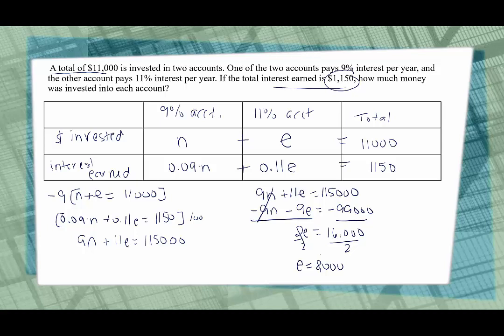How much is invested in the account that pays 9%? Go back to one of the two original equations, so you can either use this one or this one and plug in $8,000 for E. I'm definitely using the top one because that one looks way friendlier than the bottom one. When I plug in I get N plus 8,000 is equal to 11,000. Well that's saying what plus 8 is equal to 11? That would be 3, or in this case 3,000. So we know that N is 3,000.